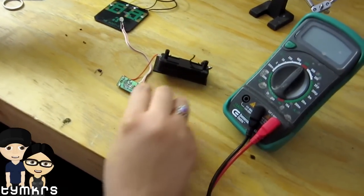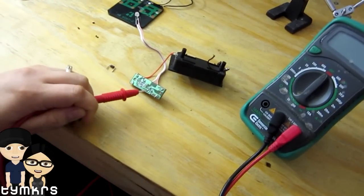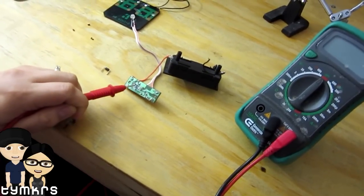So, on the back here we have a number of resistors, here, here, and here, here, and then a capacitor.